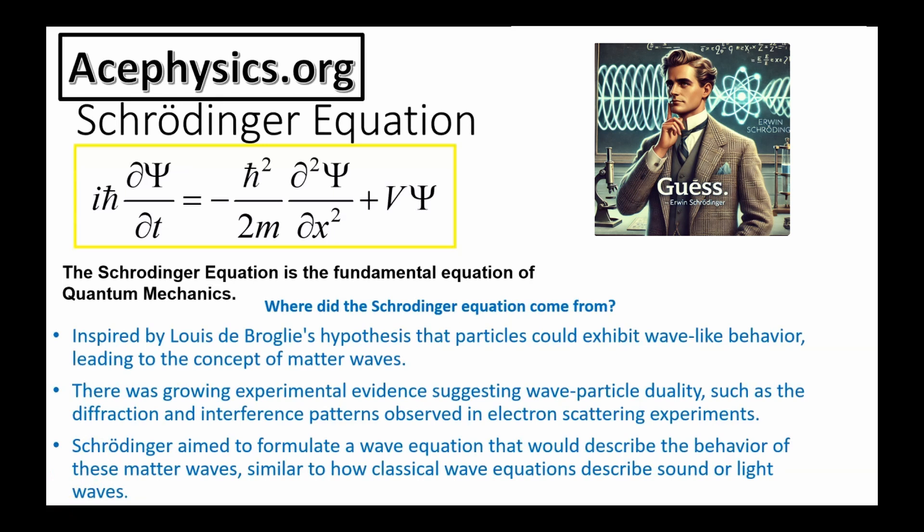During the mid-1920s, there was growing experimental evidence suggesting wave-particle duality, such as the diffraction and interference pattern observed in electron scattering experiments. Inspired by Louis de Broglie's hypothesis that particles could exhibit wave-like behavior, Schrödinger aimed to formulate a wave equation that would describe these matter waves, similar to how classical wave equations describe sound or light waves. The Schrödinger equation is a hypothesis that lacks first-principle derivation. It is a wave equation that Schrödinger proposed following the scientific method. His hypothesis proved correct,